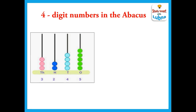Here is the first example. You can see an abacus with different beads in different place values: ones, tens, hundreds, and thousands. In ones we have five beads, in tens we have four beads, in hundreds we have two beads, and in thousands we have three beads. So it is a four digit number and it can be read as 3245.